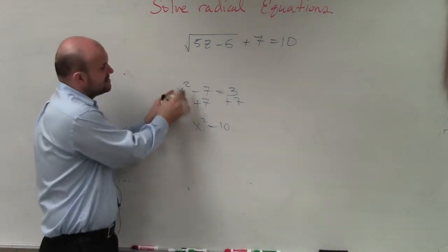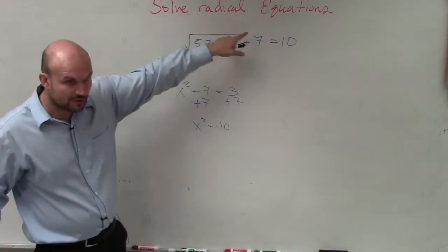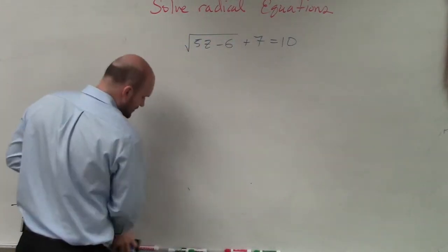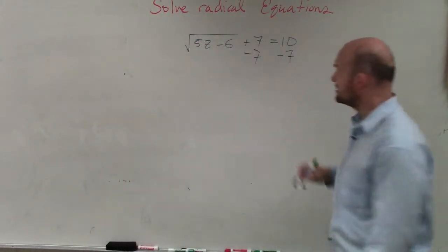So it's the same thing. Instead of isolating the x squared, we need to make sure we isolate the square root of x or the square root of our expression. So the first thing I'm going to do is I'm going to undo adding 7. So I'll subtract the 7 on both sides.